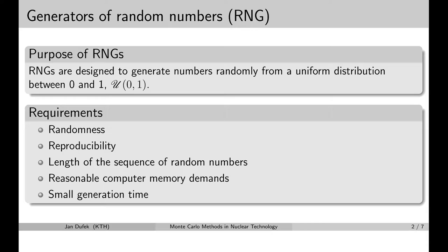We cannot do this directly. Instead, we employ the so-called random number generators, which randomly sample the interval 0 to 1, and we take this random number and transform it into a probability distribution that matches the random variable that we want to simulate. So the random number generators select numbers randomly from the uniform distribution over the interval 0 to 1.